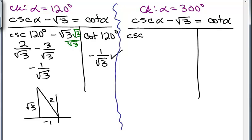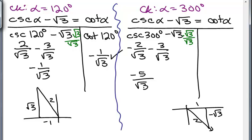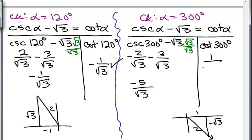Now let's check α = 300 degrees. Cosecant of 300 degrees minus square root of 3: at 300 degrees the coordinates are 1, negative root 3, and r = 2. Cosecant is r over y, so that's 2 over negative root 3, or negative 2 over root 3. Multiplying by root 3 over root 3 gives negative 2 root 3 over 3 minus 3 over root 3, which equals negative 5 over root 3. On the right side, cotangent of 300 degrees is x over y, which is 1 over negative root 3. These are not the same, so 300 degrees is not a solution — it is extraneous.